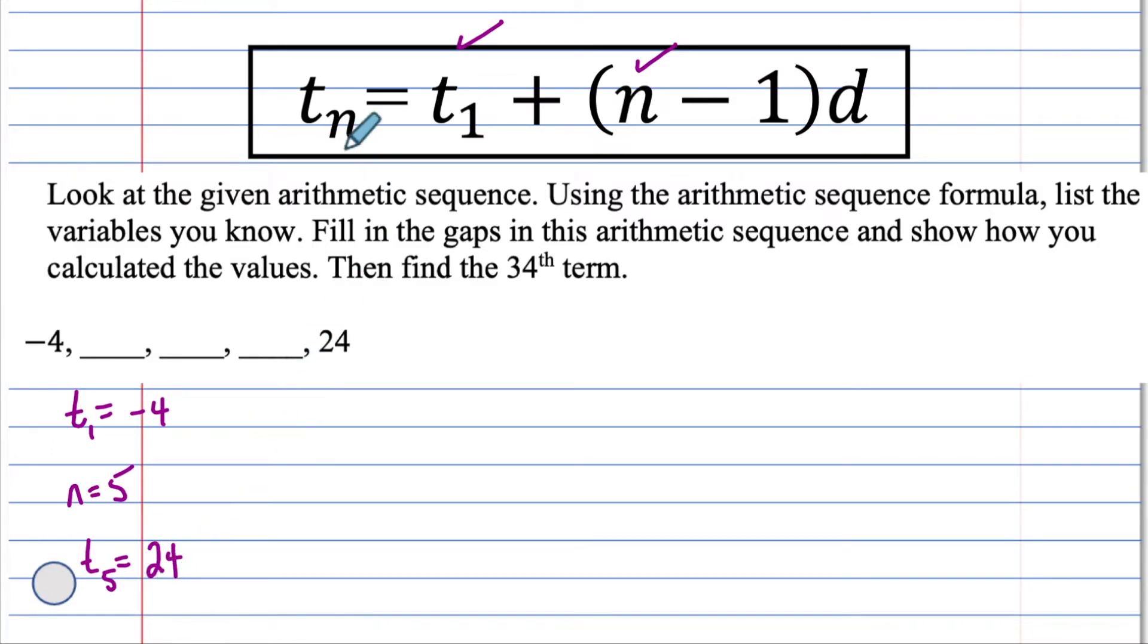Wow, you have three values, one unknown. If you find that D, that's going to help you find that 34th term. T of five is, we actually should have put 24 here, because that's what the value is in the equation. And so now we're asked, we need to solve for D. Now we have an equation we need to remember how to solve for D.